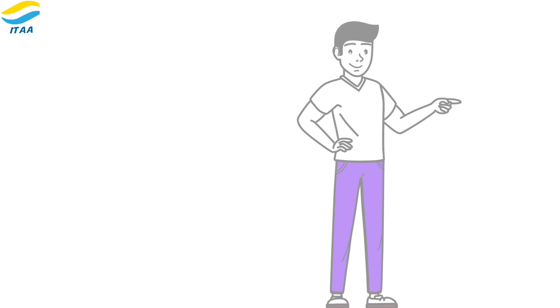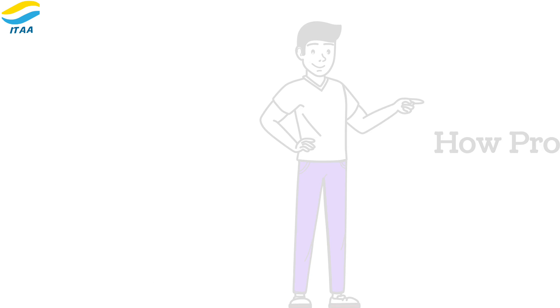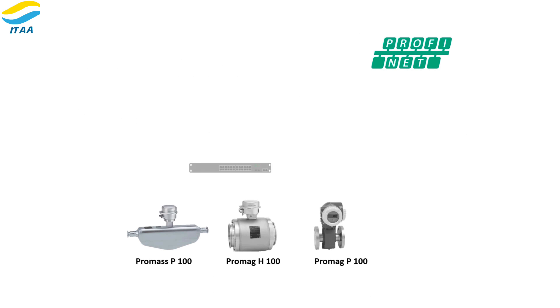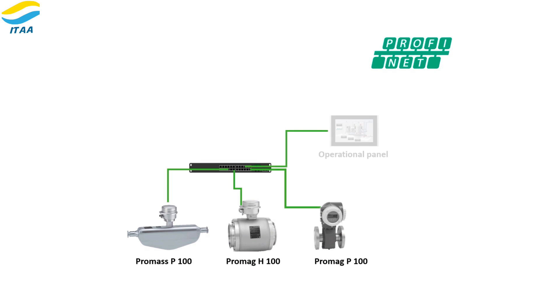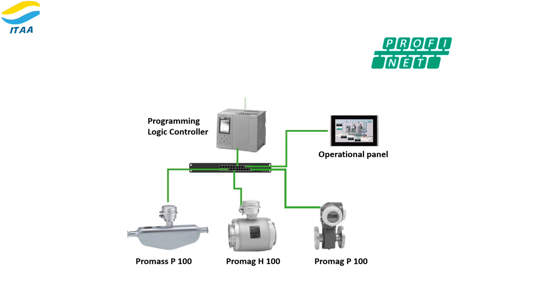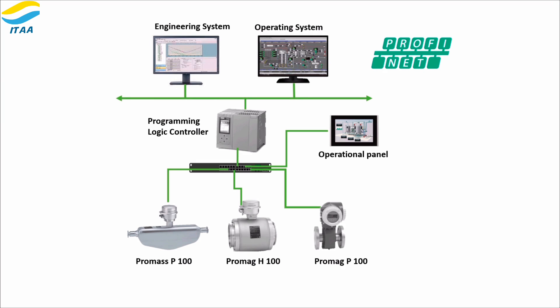Let's now discuss how PROFINET works in a real-world scenario. Devices are connected to switches using Ethernet cables. Switches manage data transmission and filtering, ensuring reliable communication. Controllers oversee data exchange and process control, handling all operations. GSD files simplify device integration by providing ready-made configurations. Devices communicate in real-time, sharing sensor and control data for seamless operation.